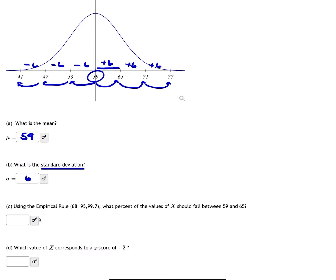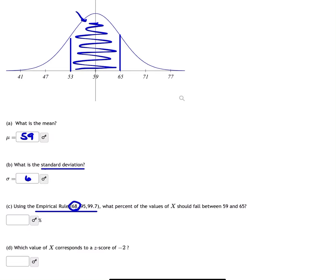Part C asks us about the empirical rule which is the 68%, 95%, or 99.7%. What the 68% means is that 68% of your data values fall within one standard deviation of your mean. So if you go out one standard deviation to the left and the right, that means 68% of your data set falls within that.